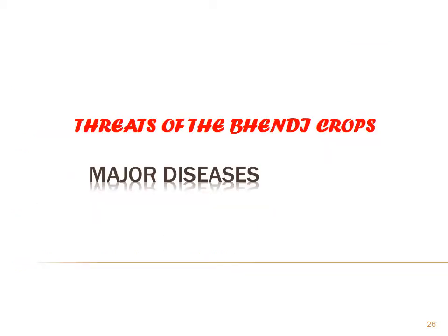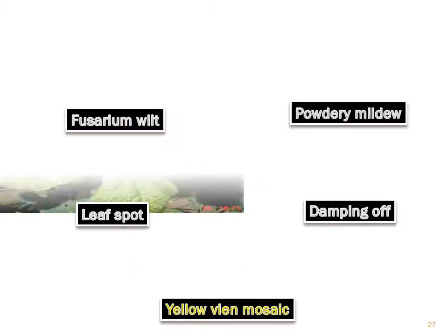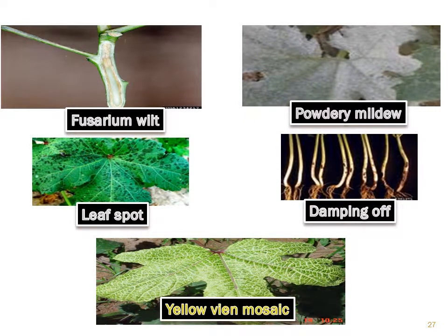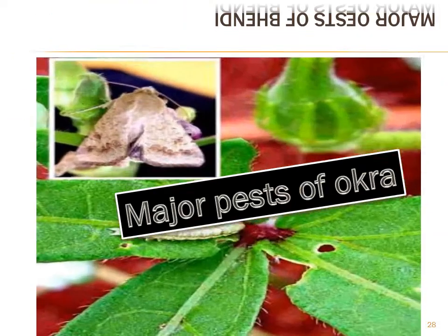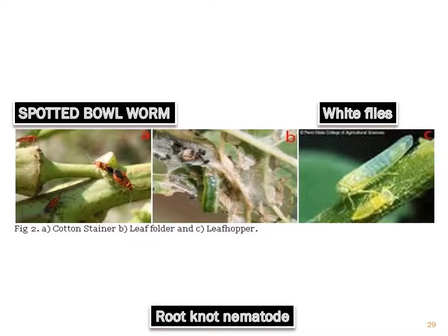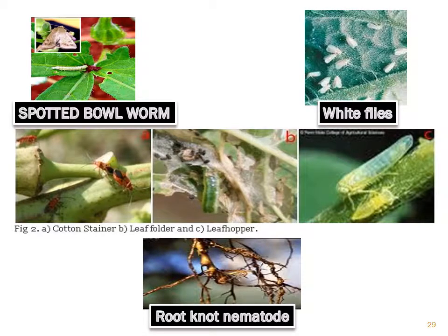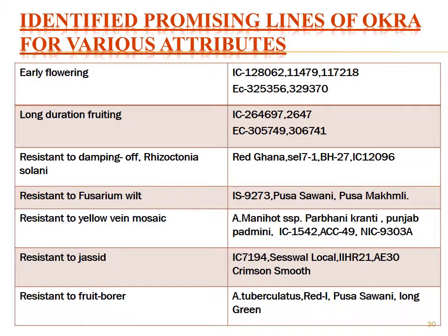Threats to the Bindi crop include major diseases. Yellow vein mosaic virus is a major disease which causes major damage — up to 80% damage can be expected from this disease. Major pests of okra include the spotted bollworm, whiteflies, cotton stainer, leaf folder, leaf hopper, and root-knot nematode.